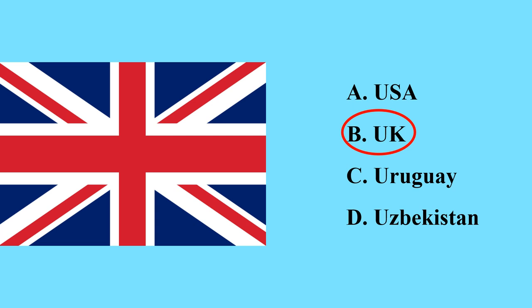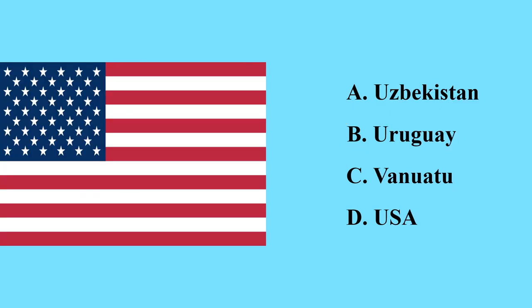This is the flag of the United Kingdom — the United Kingdom has overseas territories in almost all continents. This is the flag of the United States of America — it also has overseas territories in Oceania and North America. It is the second largest country in North America and has 50 states.